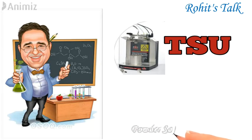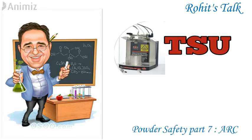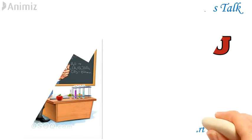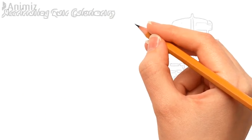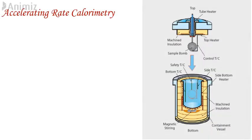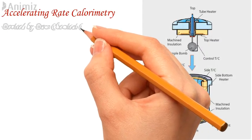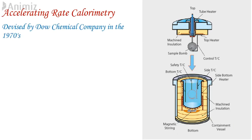So let's start today's video: Powder Safety Part 7 — Acceleration Rate Calorimetry. It was devised by Dow Chemical Company in the 1970s, when an explosion at a Dow UK site led to the commercialization of ARC technology.